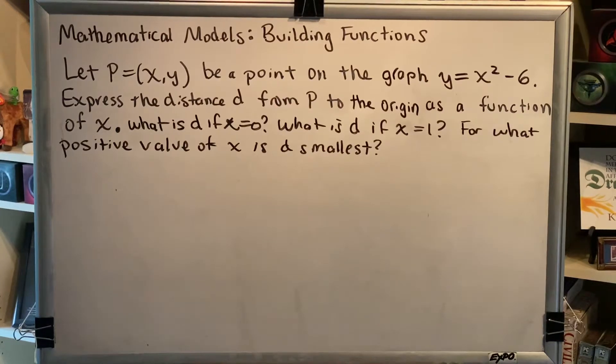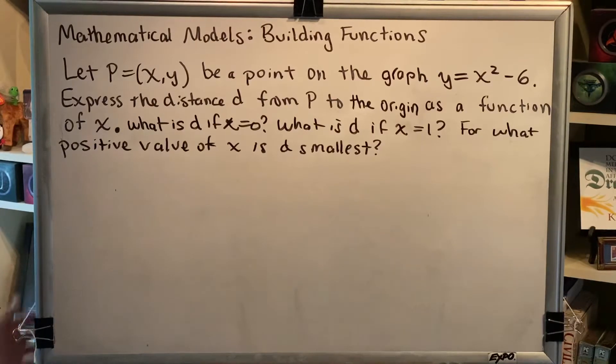The topic of this video is mathematical models building functions. Let's look at a problem. Let P=(x,y) be a point on the graph y=x²-6. Express the distance d from P to the origin as a function of x. What is d if x=0? What is d if x=1? For what positive value of x is d smallest?